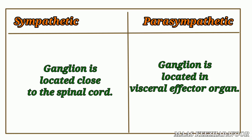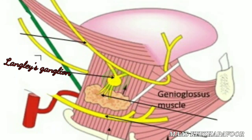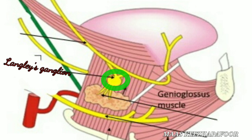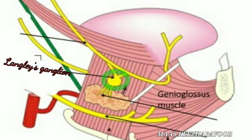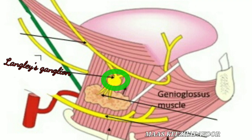Now let us move on with the submandibular ganglion. This ganglion is otherwise called the lace ganglion. It is small and fusiform in shape. It is suspended from the lingual nerve by means of two roots.